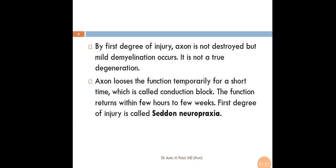By first degree of injury, axon is not destroyed but mild demyelination occurs. It is not a true degeneration. Axon loses the function temporarily for a short time, which is called conduction block. The function returns within few hours to few weeks. First Degree of Injury is called Seddon's neuropraxia.